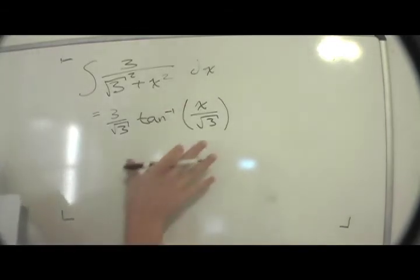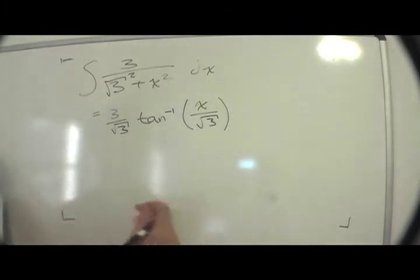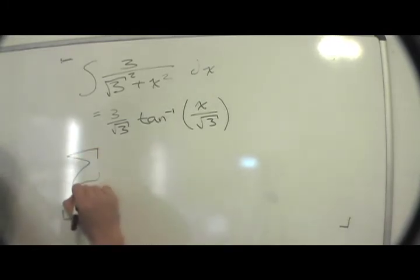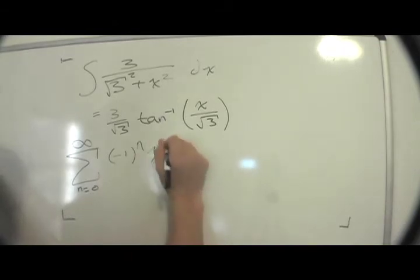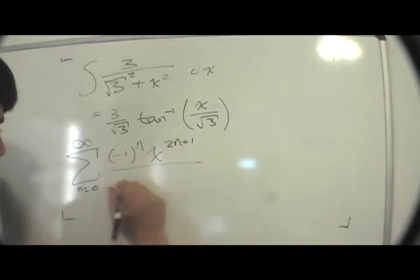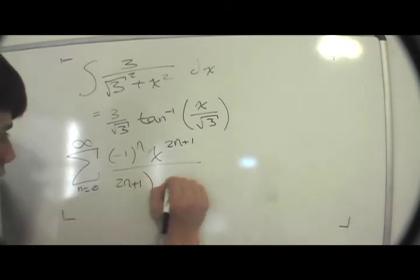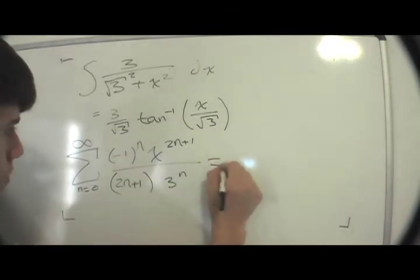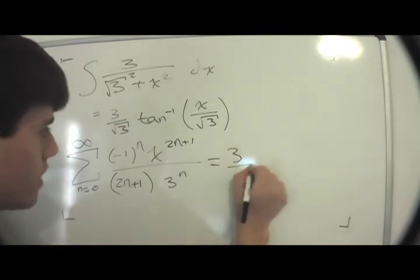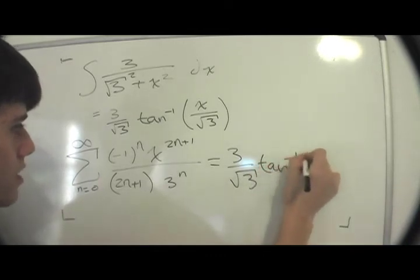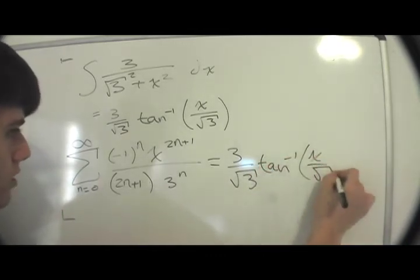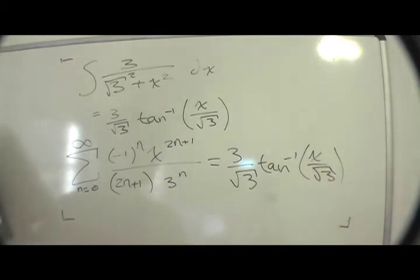So from this we now have the following: the sum from n equals 0 to infinity of minus 1 to the n, x to the 2n plus 1 divided by 2n plus 1 times 3 to the n, should be equal to 3 divided by square root of 3, so that's going to be tan inverse of x divided by radical 3.